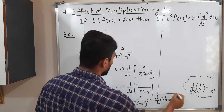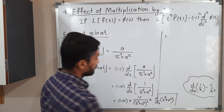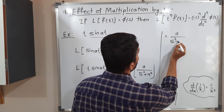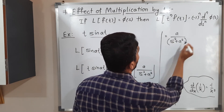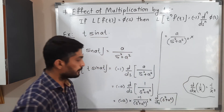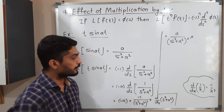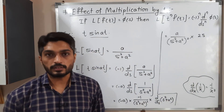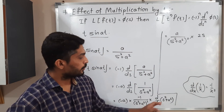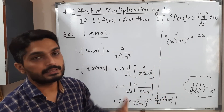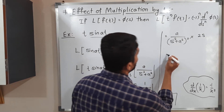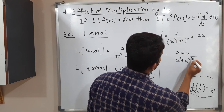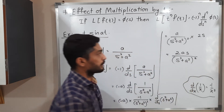Continuing: the two negatives give a positive, so we get a times 1/(s² + a²)² times the derivative of (s² + a²). The derivative of s² is 2s, and the derivative of a² (constant) is zero, so we get 2s. Therefore the result is 2as/(s² + a²)².